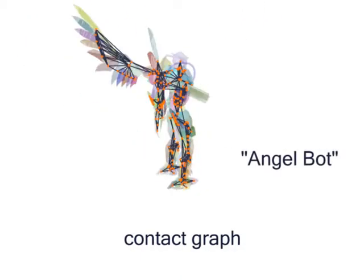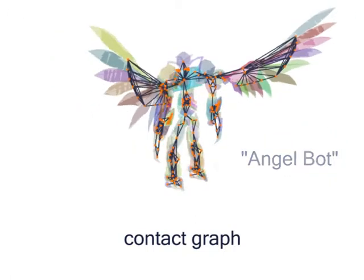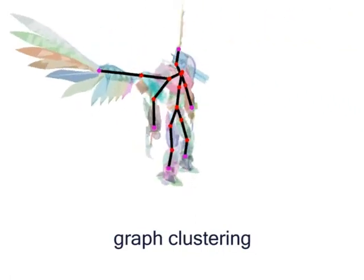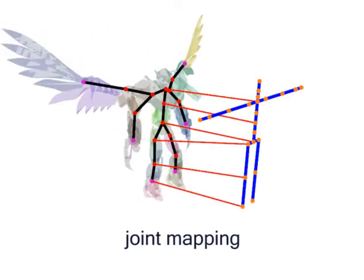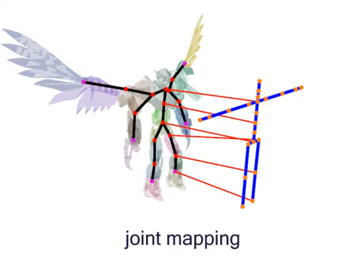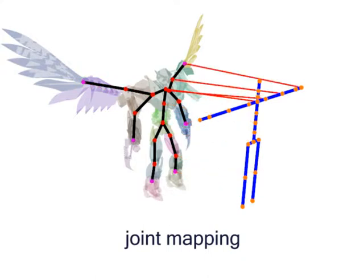In this example, the contact graph is already quite complicated. Nevertheless, the graph clustering generates a plausible target skeleton. This model has wings that are interpreted as additional arms by the system when they are mapped to a human animation skeleton.